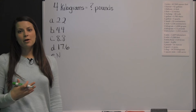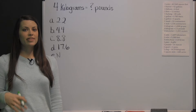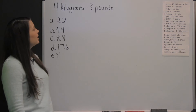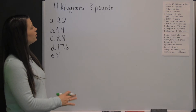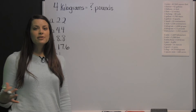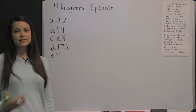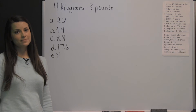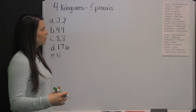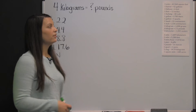This is a problem from the mathematical usage section of the CAST practice exam. It deals with converting kilograms to pounds. The mathematical usage section of the CAST exam is conversions. On this one, we're converting 4 kilograms, and we have to find the number of pounds.